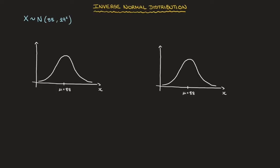To fully understand the inverse normal distribution, I'd like to start by highlighting how it differs from the normal distribution. For that I've drawn two identical bell curves here. On the one on the left I'll remind us of what we did with the normal distribution, and I'll use the one on the right to show what we use the inverse normal distribution for.